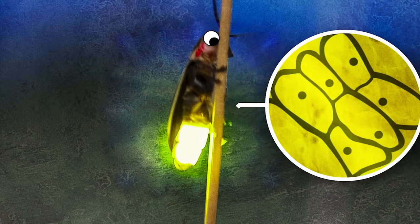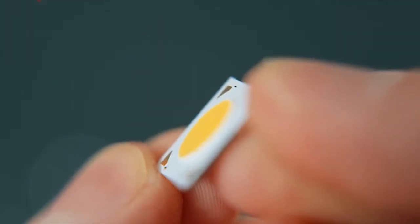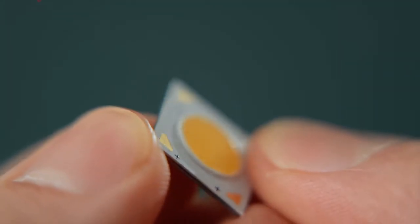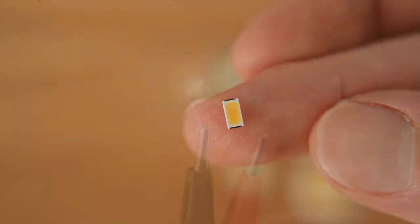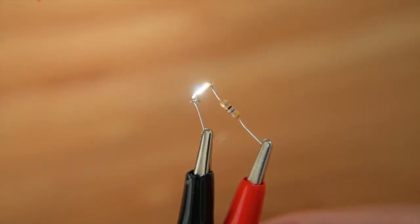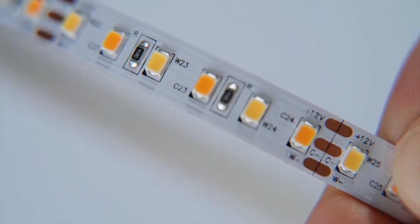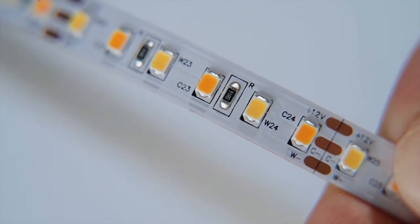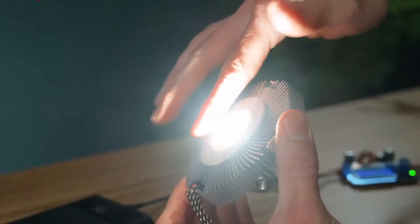Could that concept improve the efficiency of light emitting diodes, or LEDs, which are used in electronic devices? To find out, scientists coated LEDs with a corrugated surface similar to that of the firefly's lantern. The result? The LEDs emitted up to 55% more light.